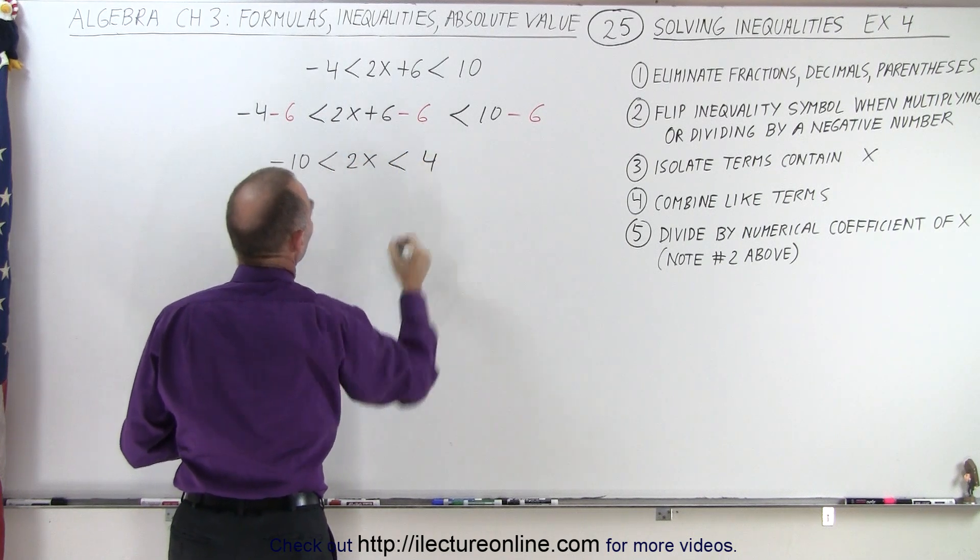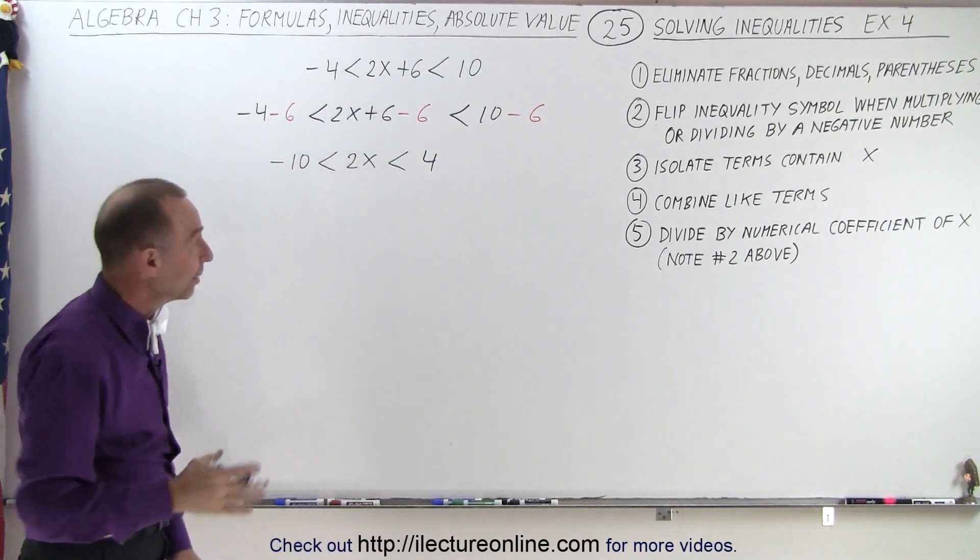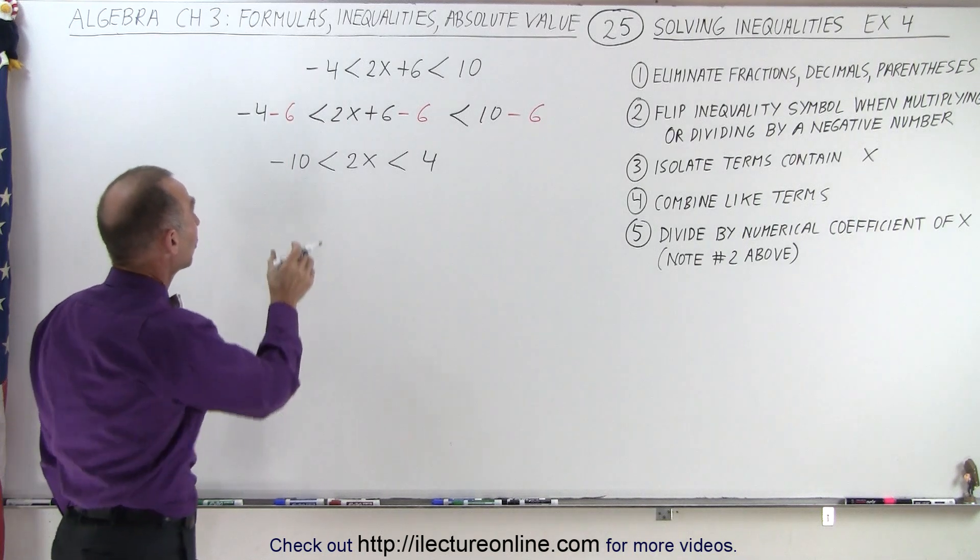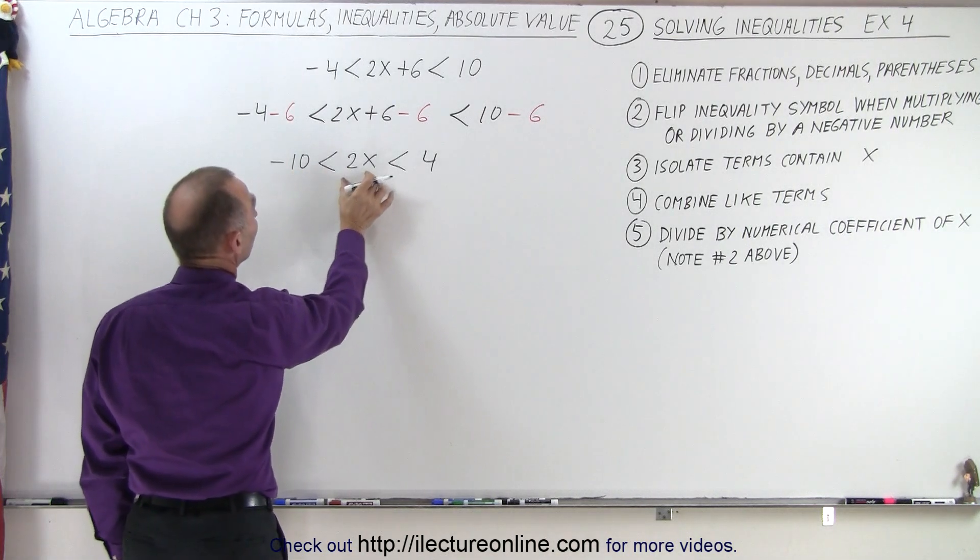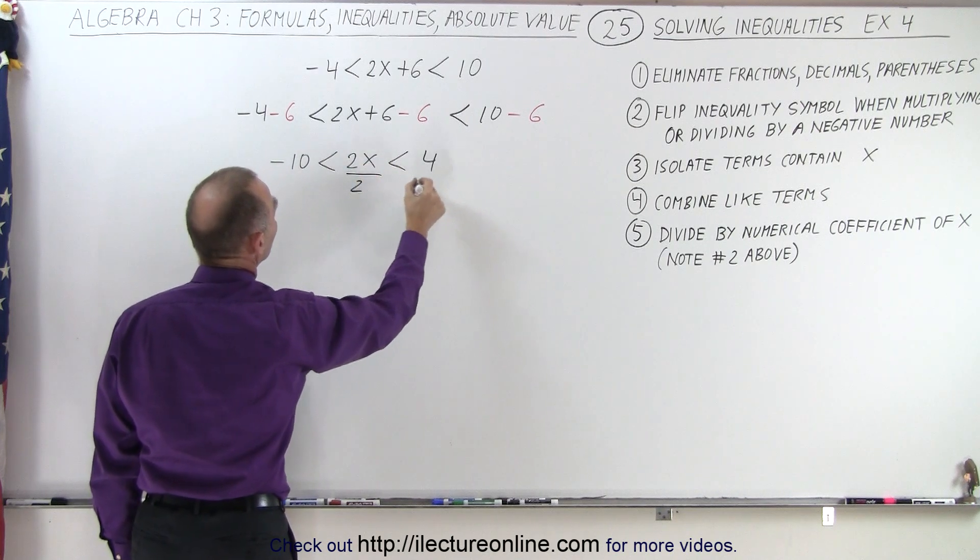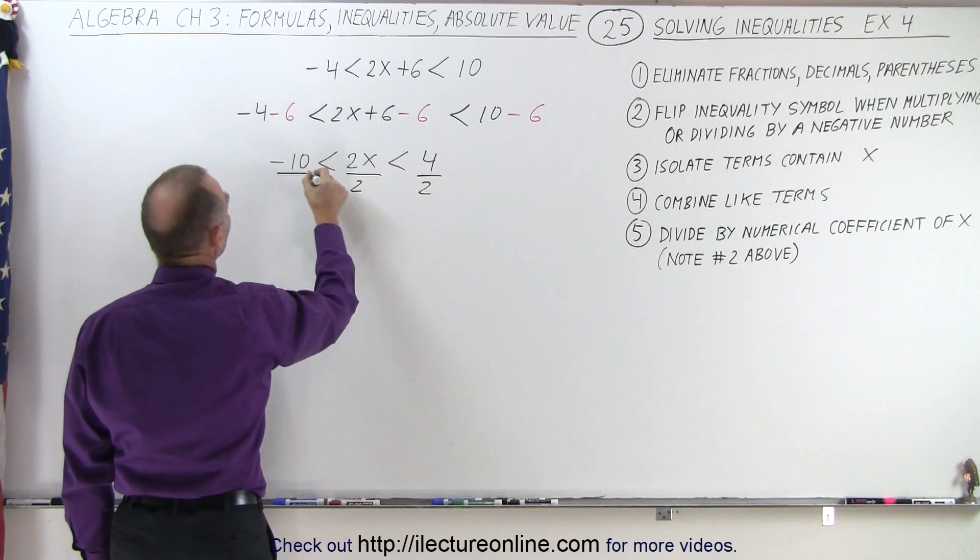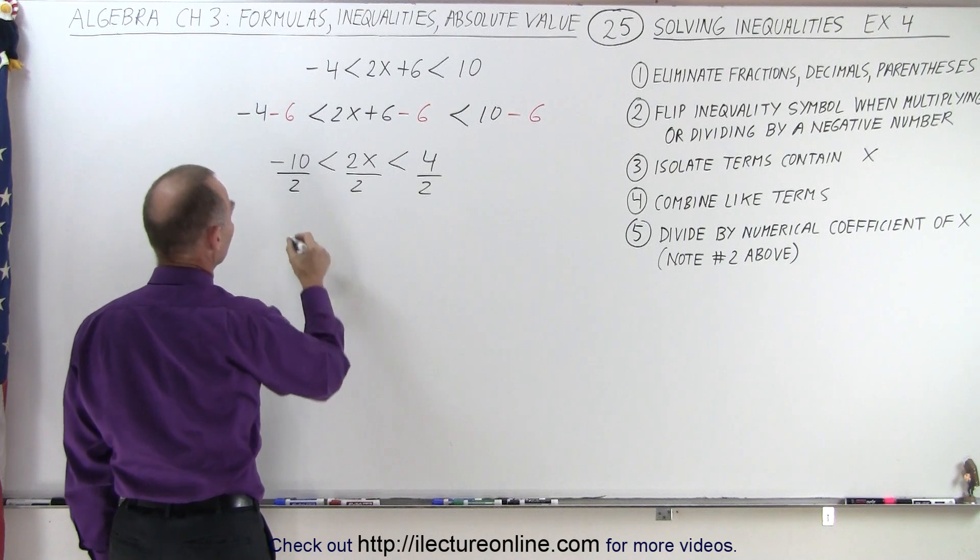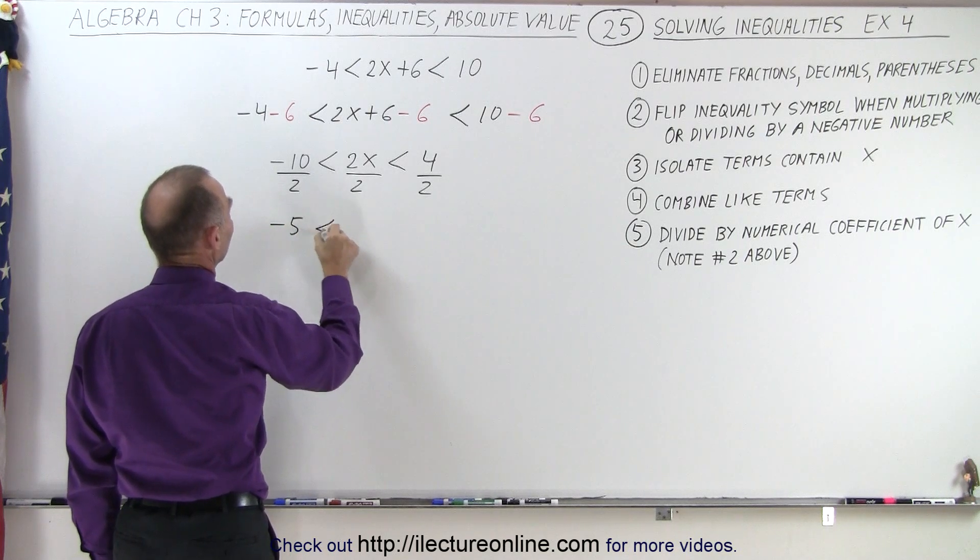Now we can go ahead and divide all three quantities, the negative 10, the 2x, and the 4, by 2 to make this into a single x. So divide this by 2, divide this by 2, and divide this by 2, which now gives us negative 5 is less than x, which is less than 2.